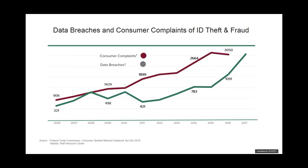An FTC graph correlating data breaches since 2003 with consumer complaints shows a direct correlation: as the number of data breaches has increased, we've also seen a direct correlation in complaints for ID theft and fraud. This trend is not going to slow down — we're still seeing breaches, breached credentials, and personal data compromised. What this shows us is that there needs to be a shift in thinking and in the way that we protect customers' accounts and data.